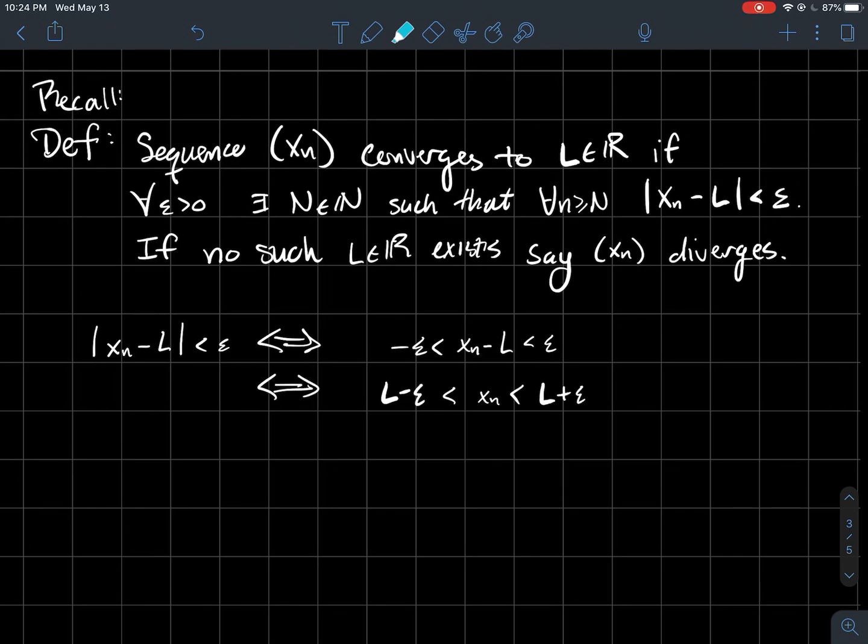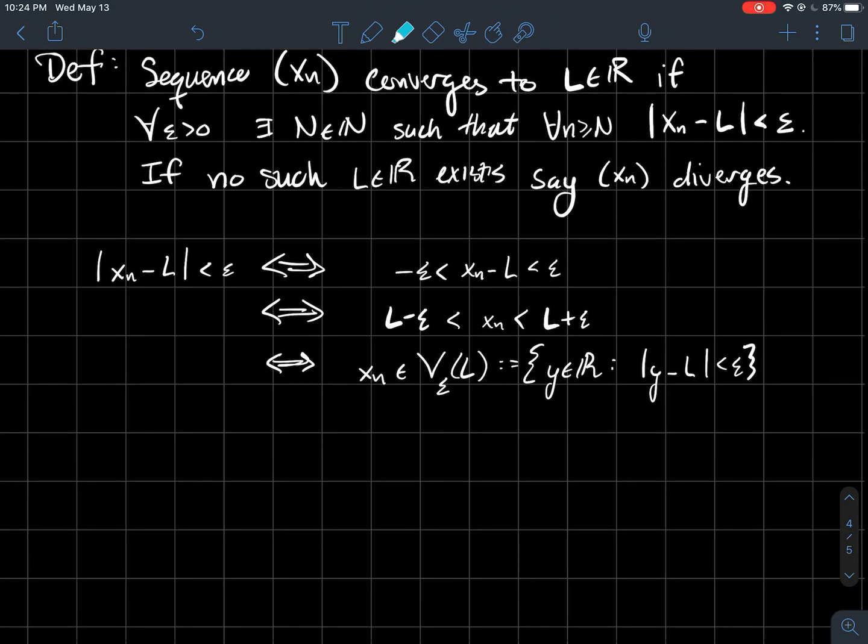That's equivalent to saying x_n is between L minus epsilon and L plus epsilon. This is the same as saying x_n is inside an epsilon neighborhood of L, defined as the set of all real numbers whose distance from L is less than epsilon.